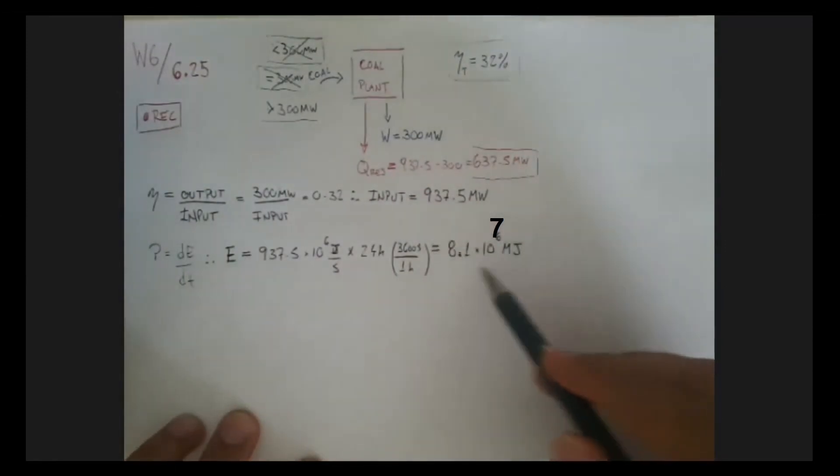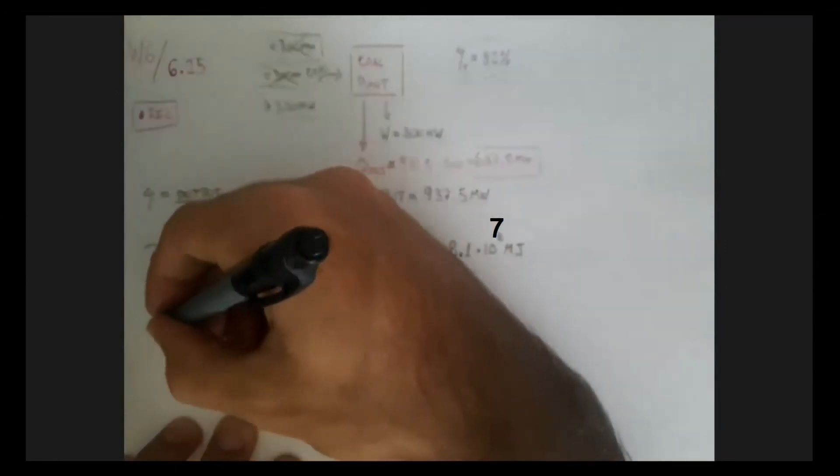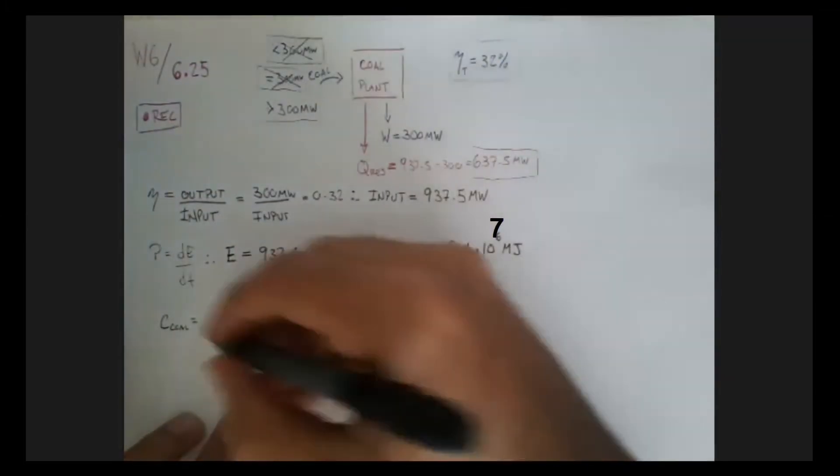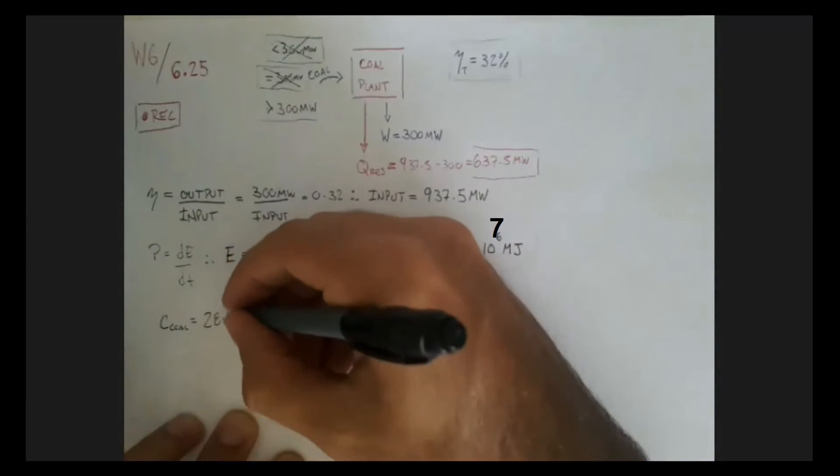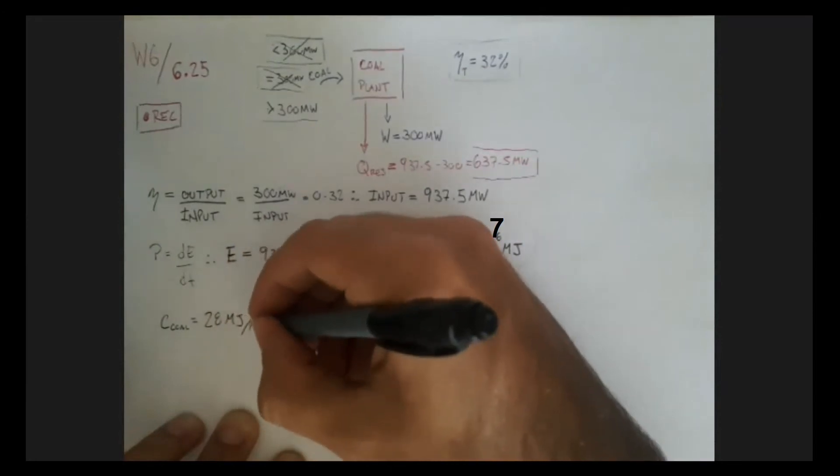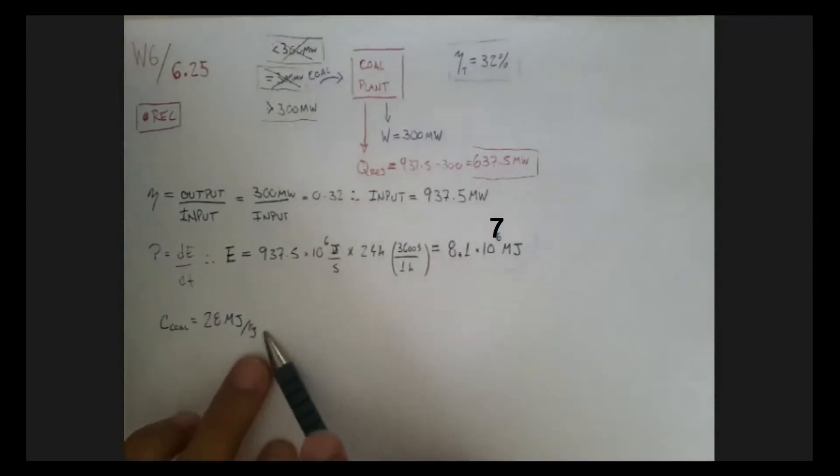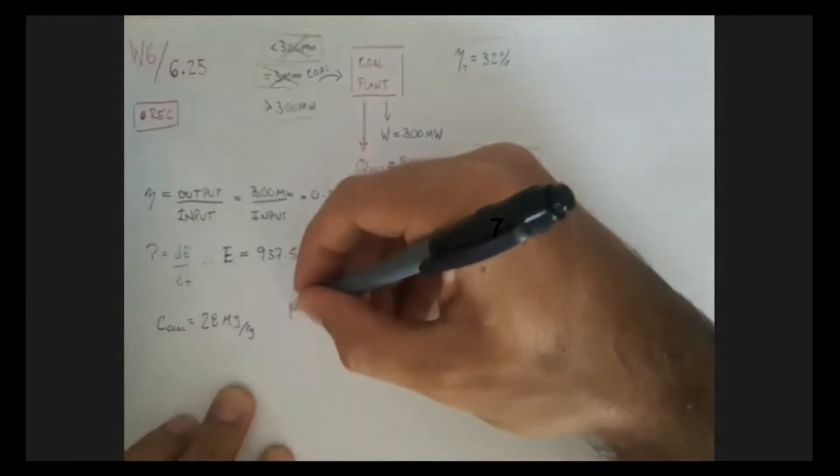So how much does this represent mass of coal? Well, the heating value of coal has been given to us as 28 megajoules per kilogram. There's no formula per se. All we want is how much mass. So we just need to get this total amount divided by how much the individual one is, and we should get the mass of coal.